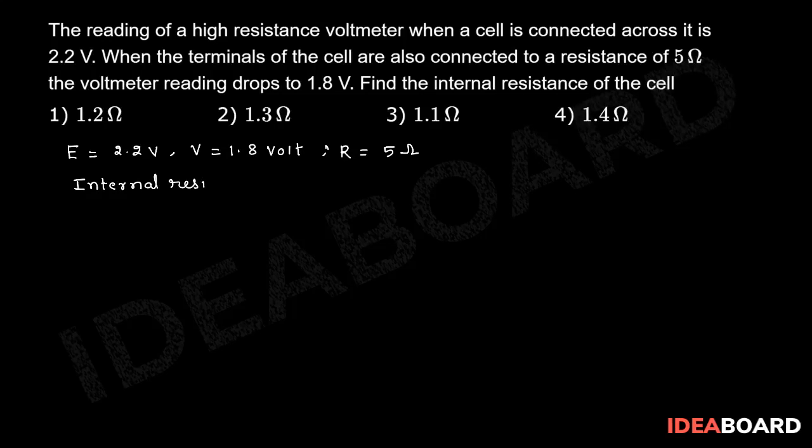Internal resistance of the cell, small r, is equal to (E/V - 1) × R. Substituting the values, small r equals (2.2/1.8 - 1) × 5.